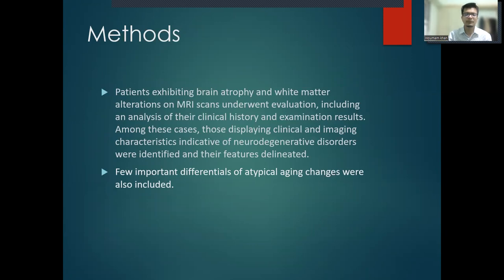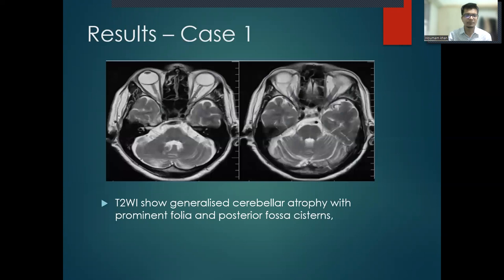Patients exhibiting brain atrophy and white matter alterations on MRI scan underwent evaluation, including analysis of their clinical history and examination results. Among these, those displaying clinical and imaging characteristics indicative of neurodegenerative disorders were identified and their features delineated. Two important differentials of atypical aging changes were also included.